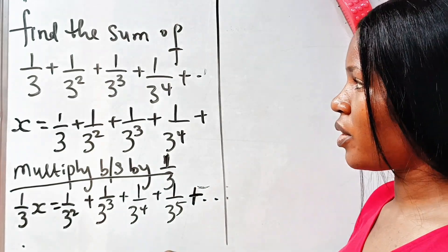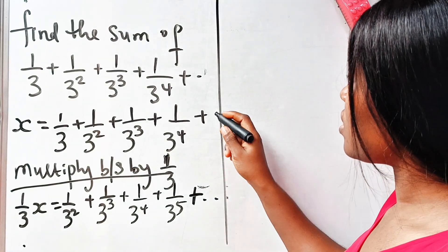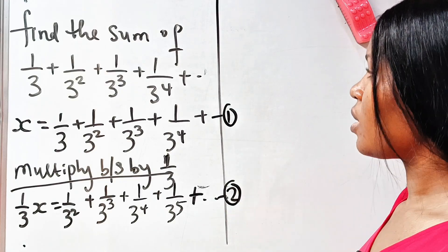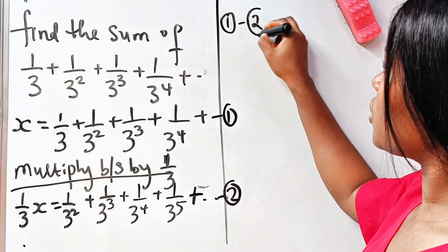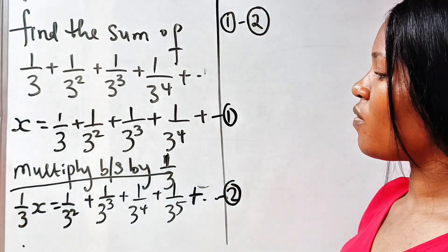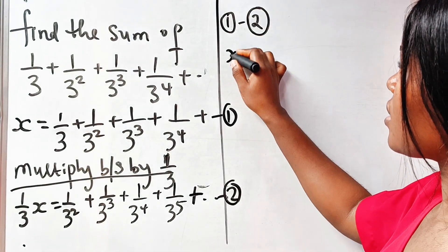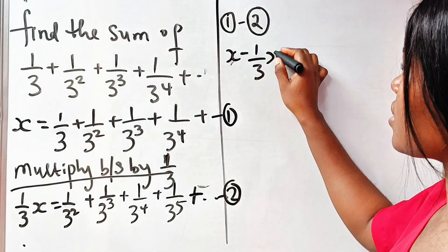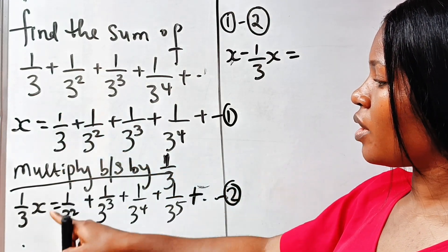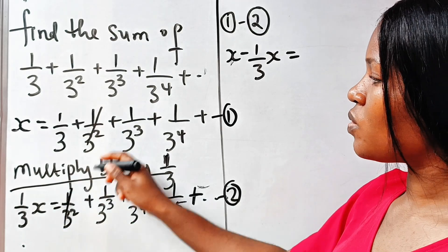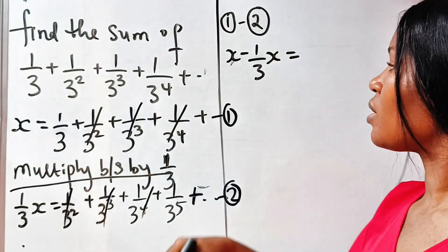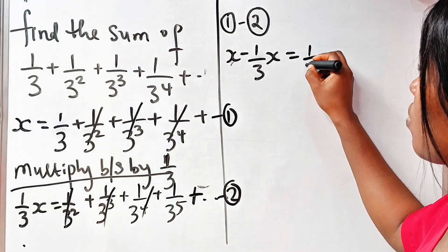Now, let us call this equation 1 and then call this equation 2. So if we say equation 1 minus equation 2, we will have x minus 1 over 3x. Now, this term minus this term cancels, this minus this cancels, this minus this cancels, and so on. So we are left with 1 over 3. It's equal to 1 over 3.